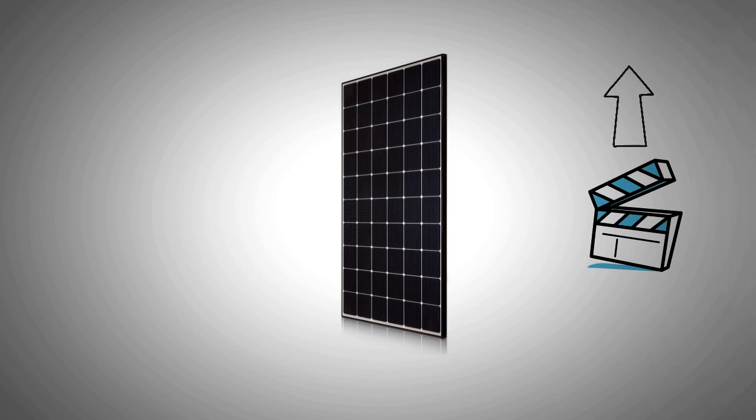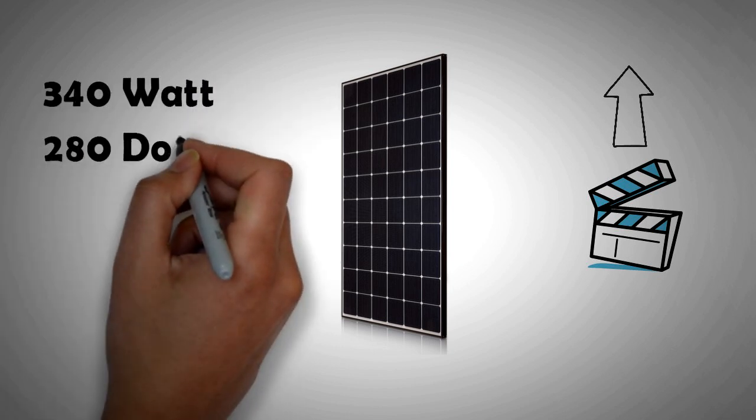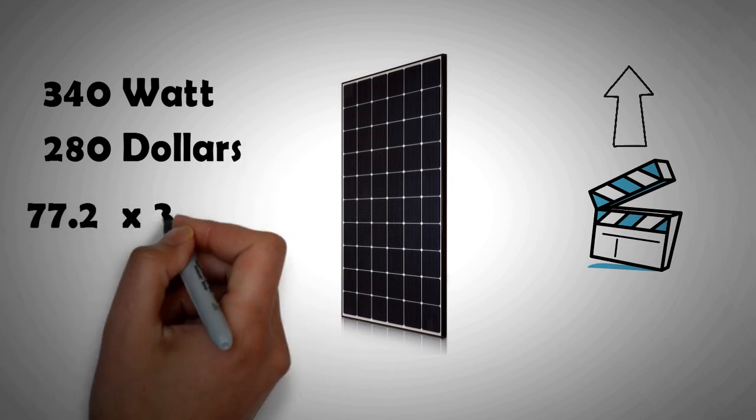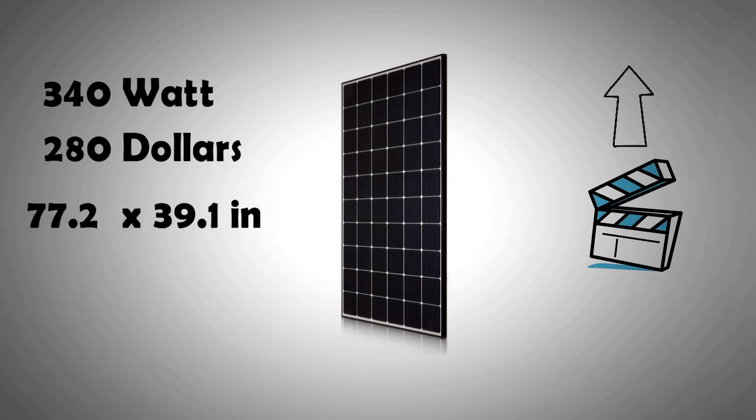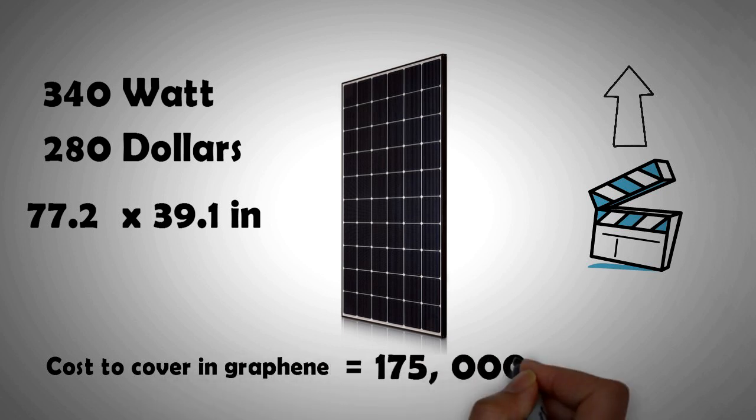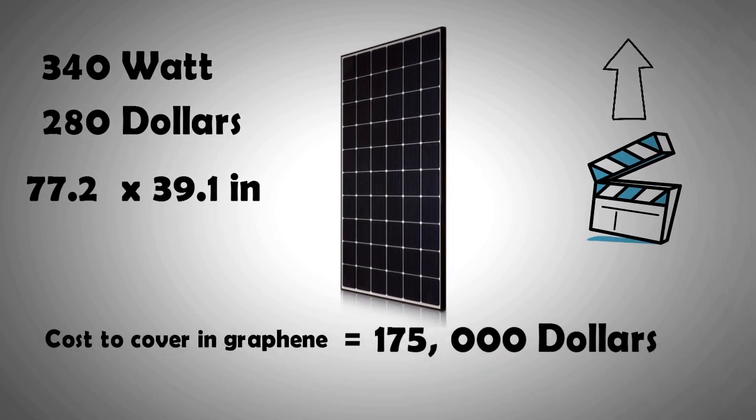Now let's imagine we chose a 340 watt panel that costs $280. The area of that panel is 77.2 by 39.1 inches. This means to cover that panel with a patched layer of low quality graphene would cost a whopping $175,000.